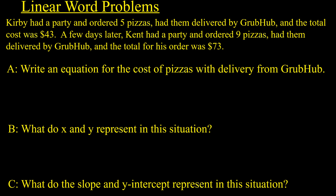We've got a couple word problems to look at. The goal of this lesson is to write a linear equation for these word problems, and also talk about what x and y are and what slope represents. The first problem: Kirby had a party and ordered five pizzas, had them delivered by Grubhub, and the total cost was $43. A few days later, Kent had a party and ordered nine pizzas, had them delivered by Grubhub, and the total was $73.